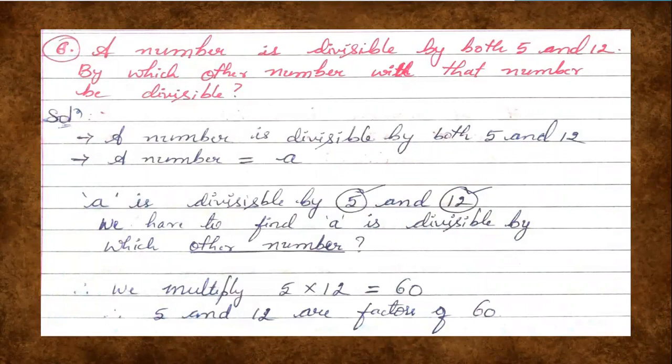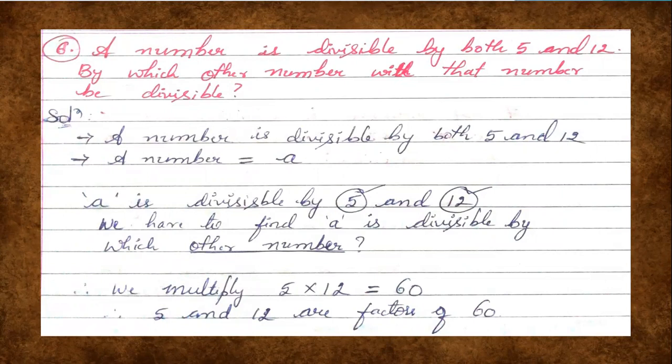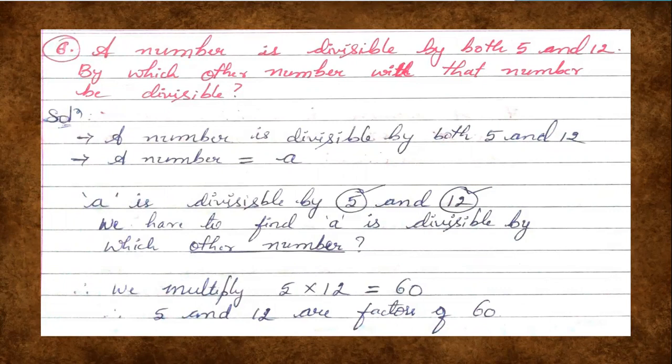This is a continuation of the exercise, this is the sixth question. The given question is: a number is divisible by both 5 and 12. By which other number will that number be divisible?